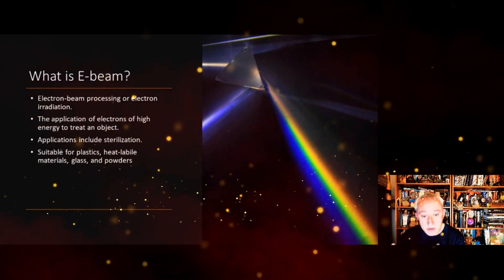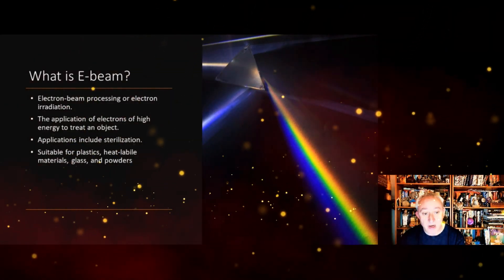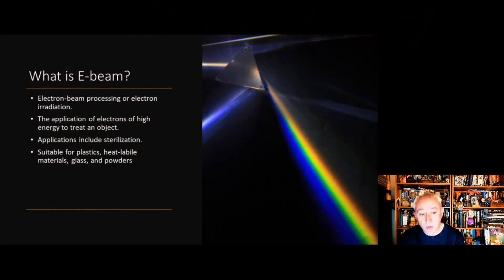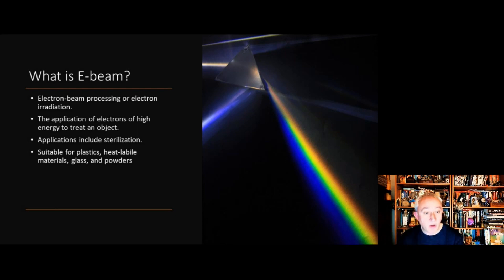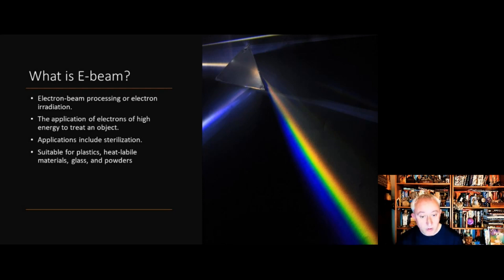E-beam, or electron beam processing or electron irradiation, involves using electrons at high energy. The focus here is sterilization, although it's used in other sectors — for example, altering the colors of gemstones or in material science to cross-link polymers. To sterilize an object, it is bombarded with high energy electrons, leading to a cascade of electrons being directed through the target material.